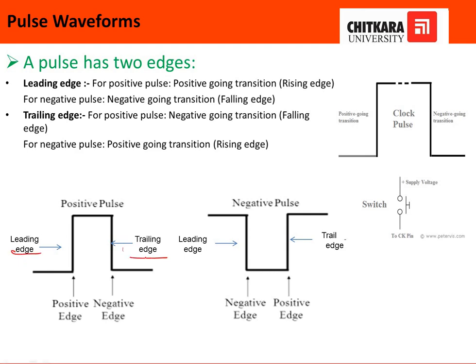In technical terms, this pulse waveform has a leading edge and a trailing edge. When switching from 0 to 1 — from negative to positive — that edge is known as the leading edge or positive edge. Whenever you make a transition from 1 to 0, that is known as the trailing edge or negative edge.